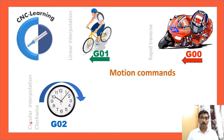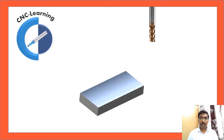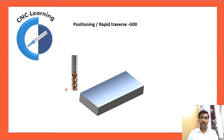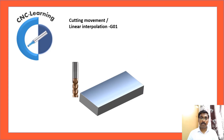G02 is circular interpolation clockwise — the movement happens in the direction your clock needles move. G03 is circular interpolation counterclockwise. For rapid traverse, the tool is positioned at a very rapid rate with movement in air. G01 is for cutting movement: first the tool is positioned in rapid, then cutting happens. So G01 is used for cutting.